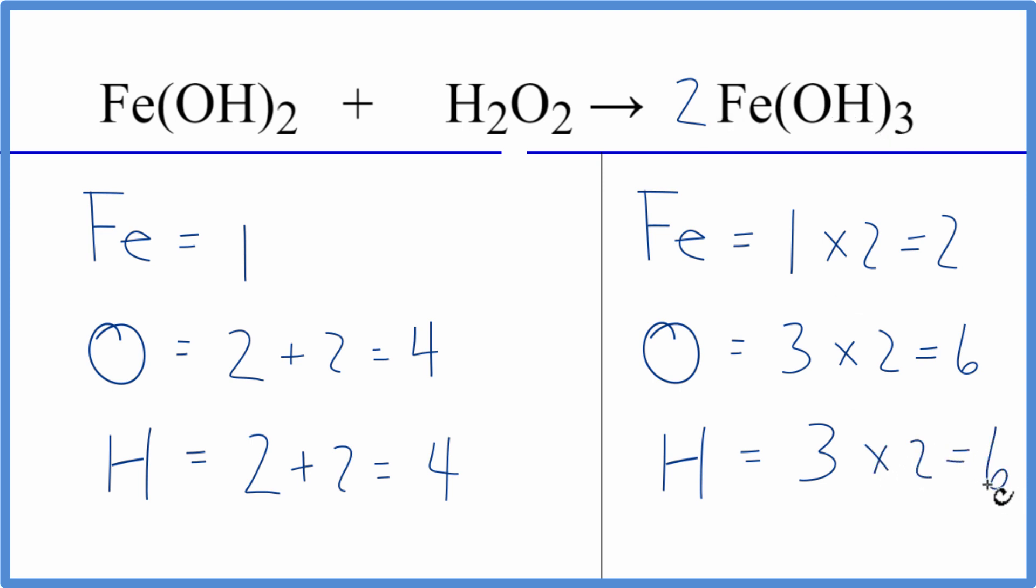Now we have to double our irons, and then we need 2 more oxygens and 2 more hydrogens. It works out if we put a coefficient of 2 in front of the Fe(OH)₂. 1 times 2, so the irons are balanced, and then we need to recalculate our oxygens and hydrogens.